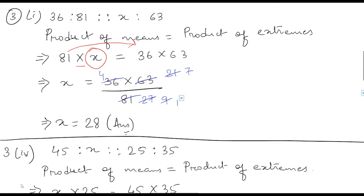Now let us move to question number three: find the value of X in each of the following proportions. Number one is 36 is to 81 is in proportion with X is to 63. So these two ratios are in proportion, that means the product of means will be equal to the product of extremes.